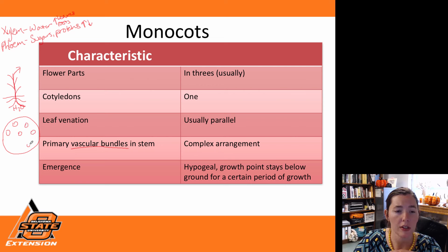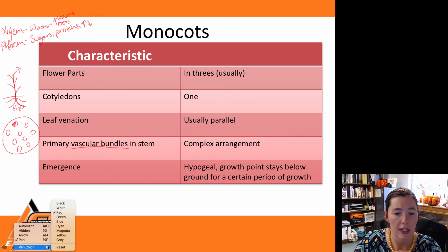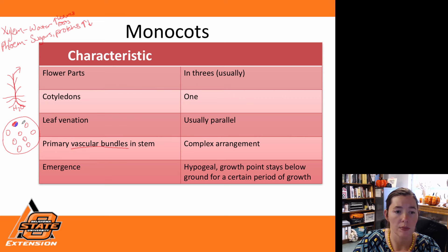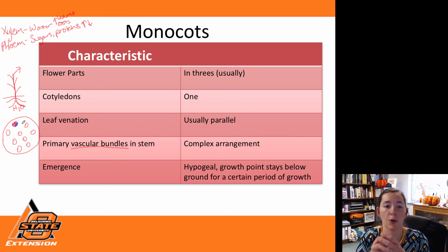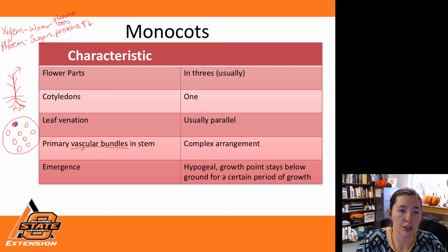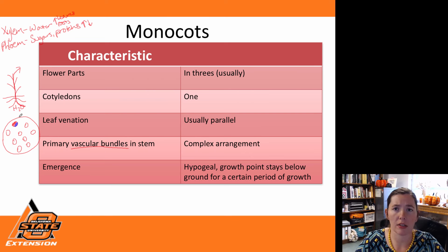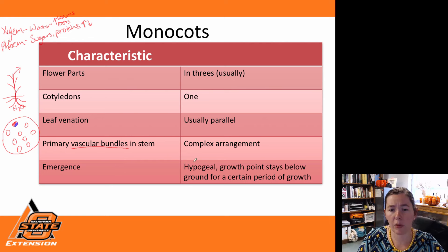If we look at how vascular bundles are arranged in our monocots, they're kind of randomly distributed throughout the plant. We have the phloem portion of that bundle and the xylem portion — that's making up those vascular bundles. The xylem is pulling the water, and the sugars are able to move throughout via the phloem. This is kind of like the highway system of our plant, getting nutrients and water throughout.